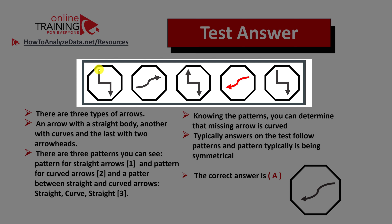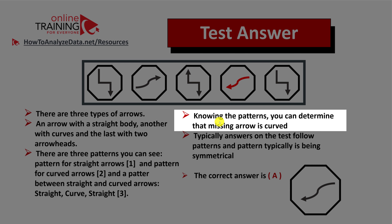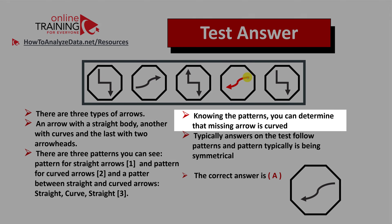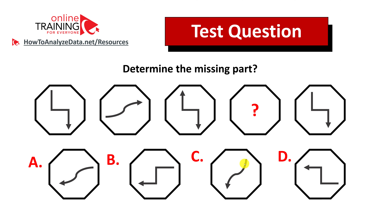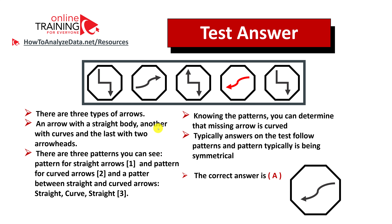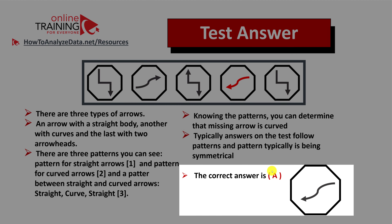You also see that the pattern of straight arrows going down appears in the first and fifth shapes. Knowing the patterns, you can determine that the missing arrow is curved. But there are at least two curved arrows, and typically the pattern on the test is symmetricity. The arrow in choice C is not symmetrical to the arrow in shape 2. This is why the correct answer is choice A.